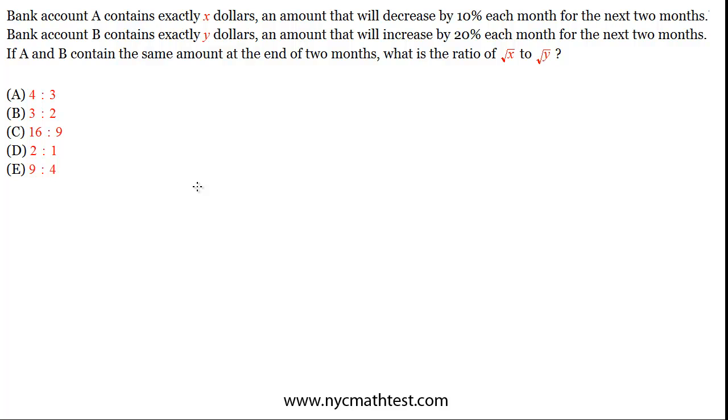Hi, this is Dan Malloy, continuing with GMAT Math. Bank account A contains exactly X dollars, an amount that will decrease by 10% each month for the next two months. Bank account B contains exactly Y dollars, an amount that will increase by 20% each month for the next two months. If A and B contain the same amount at the end of two months, what's the ratio of root X to root Y?